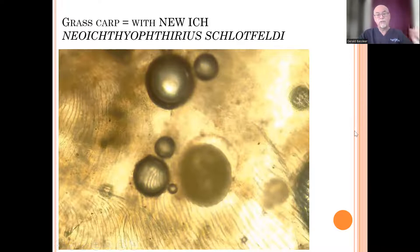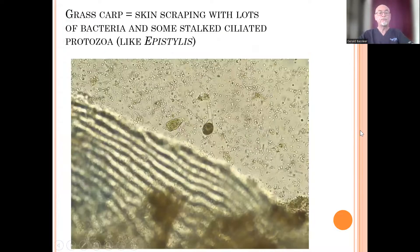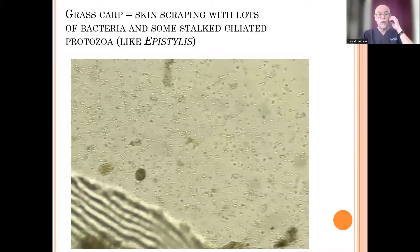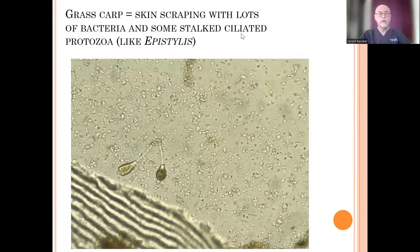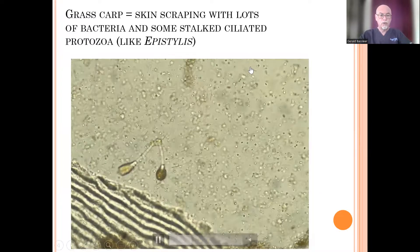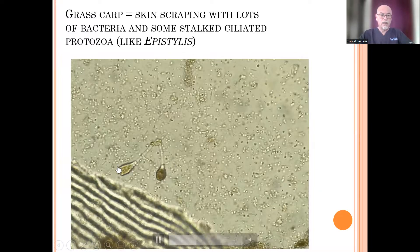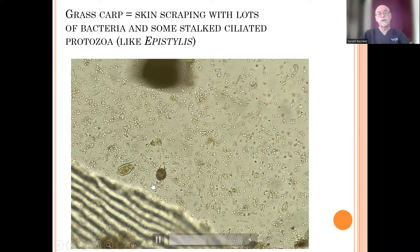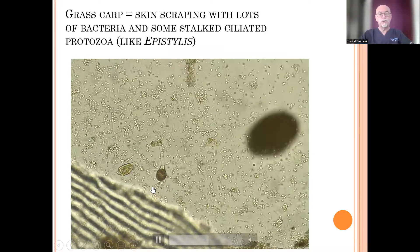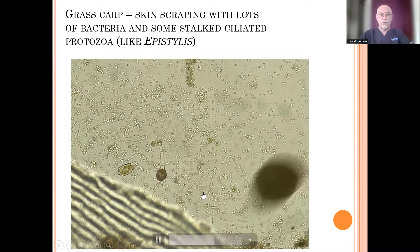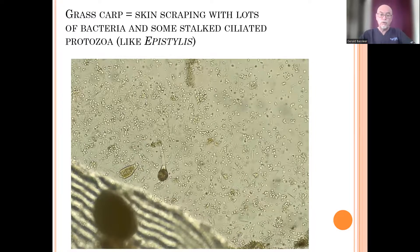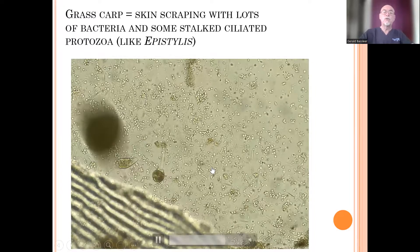The skin scraping also showed we had a few stalked ciliated protozoa that look like Epistylis — they can also penetrate into the mucus. And look at this — a white spot quickly moving around. Yes, this is the unusual white spot parasite, Neo Ichthyophthirius.